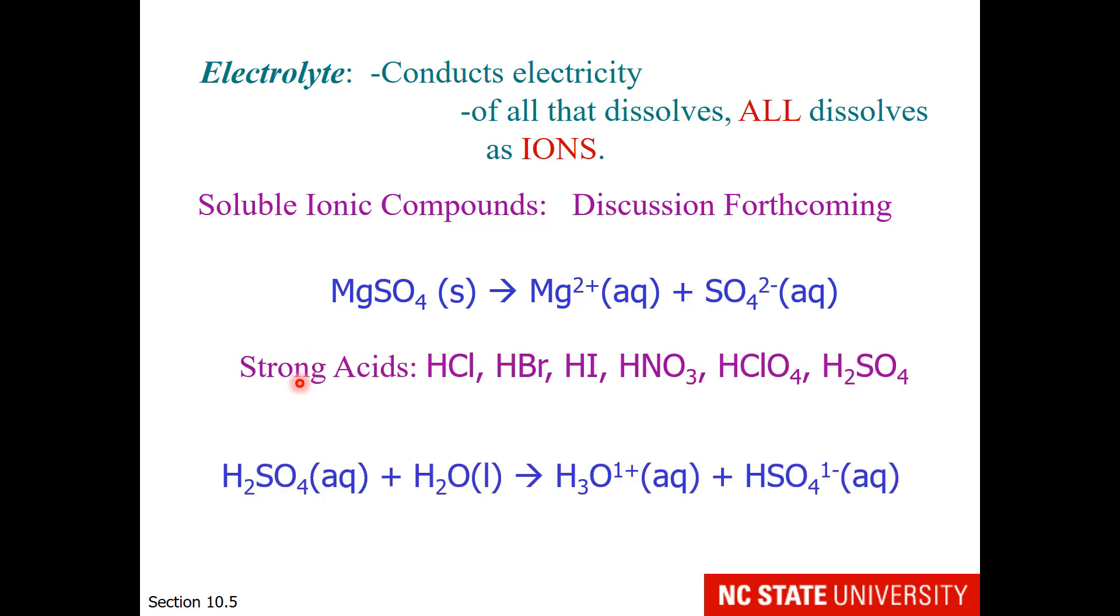Strong acids are also strong electrolytes. For right now, I have a list of six strong acids for you to memorize. But don't worry, by the time you get to test four, you're going to be given an acid-base table that will help you with this. For the short term, please recognize that HCl, HBr, HI, nitric acid, perchloric acid, and sulfuric acid are all strong electrolytes. When placed in water, they form the cation hydronium and the anion, which is the conjugate base.